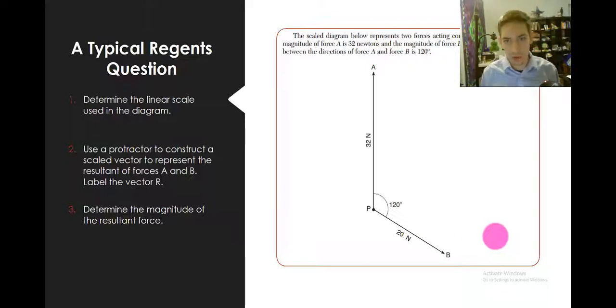The scale diagram questions are almost always part 2 questions because you have to draw pictures and stuff. So the first question is to determine the linear scale used in the diagram. Second question is to use a protractor to construct a scaled vector to represent the resultant of forces A and B and label the vector R. And then determine the magnitude of the resultant force.